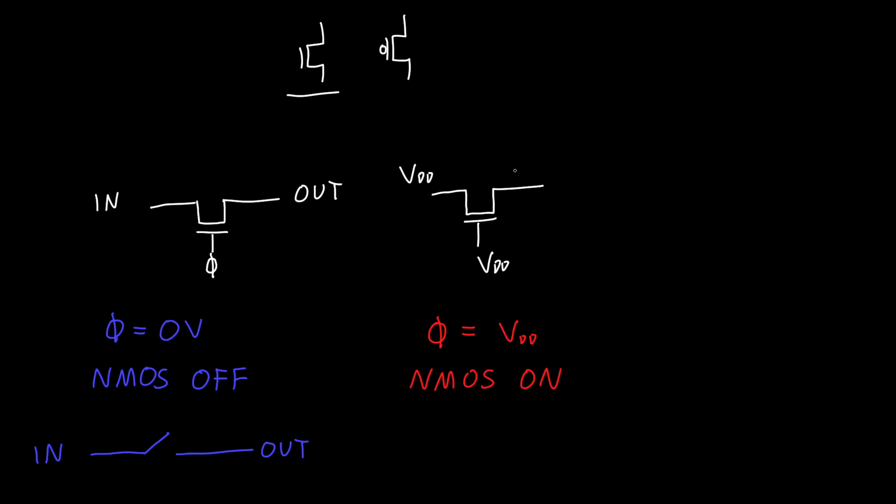But if our input is equal to VDD, then the output can be at most VDD minus the threshold voltage of the transistor. And that's because the source of an NMOS has to be, or the gate to source voltage has to be at least the threshold voltage.